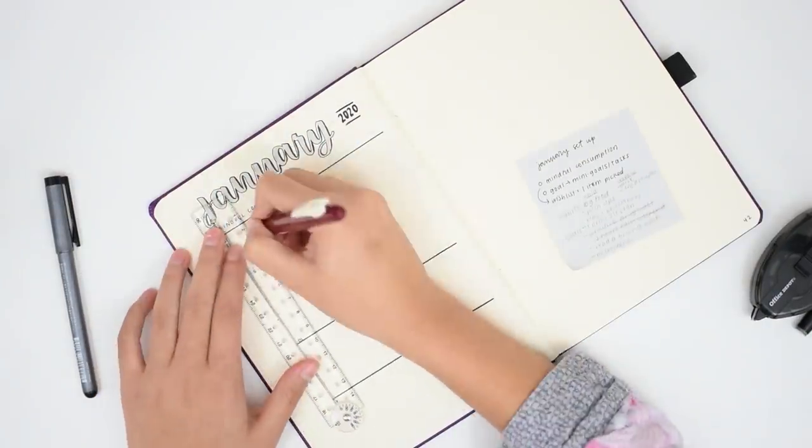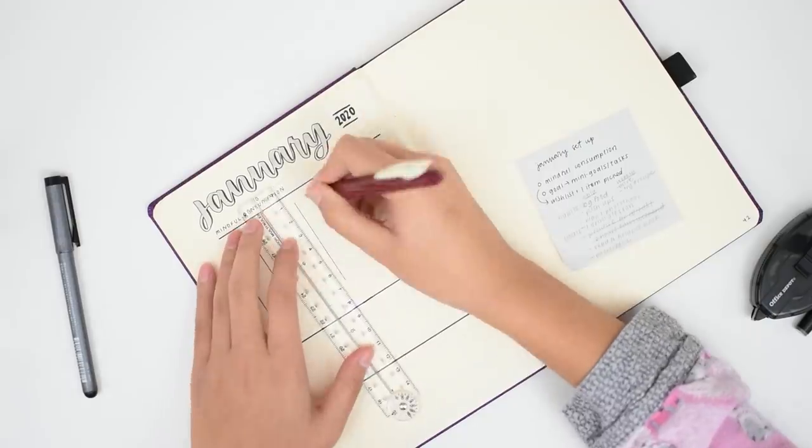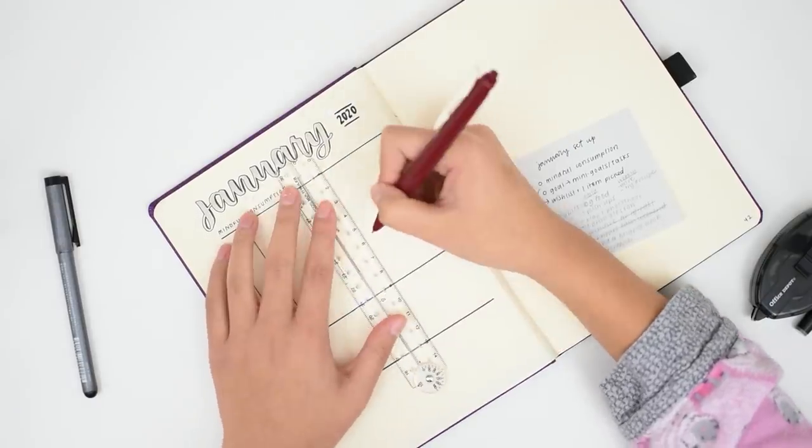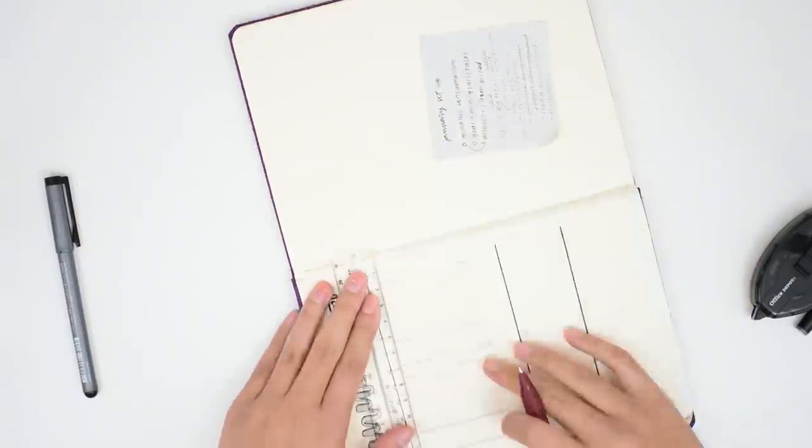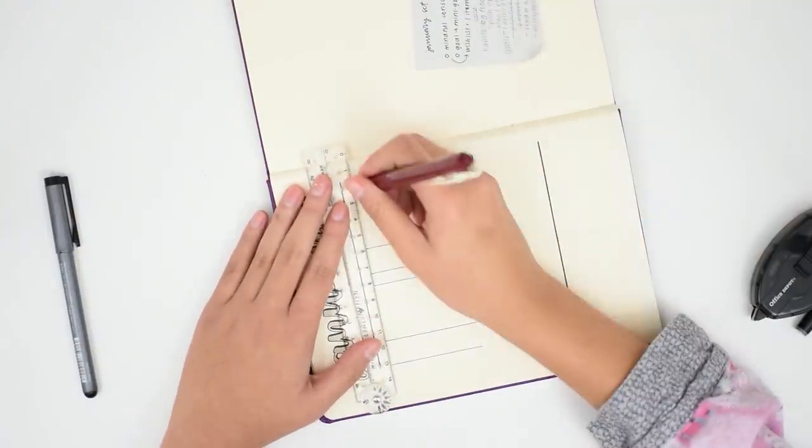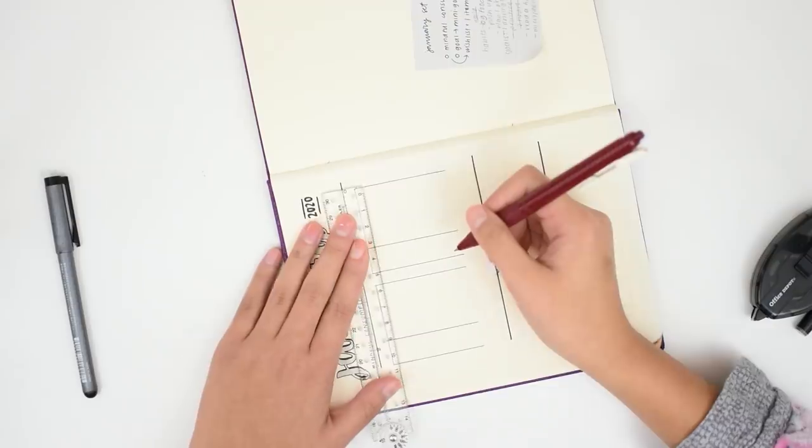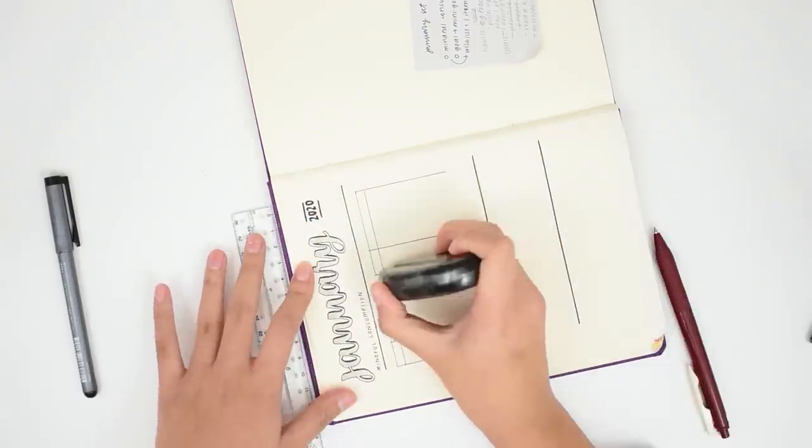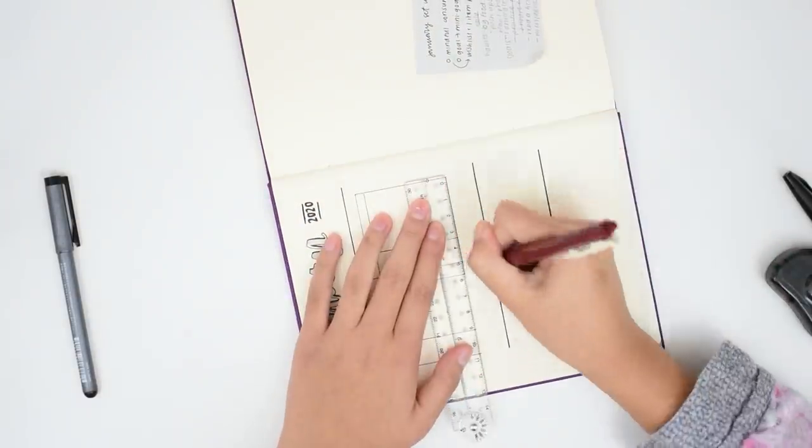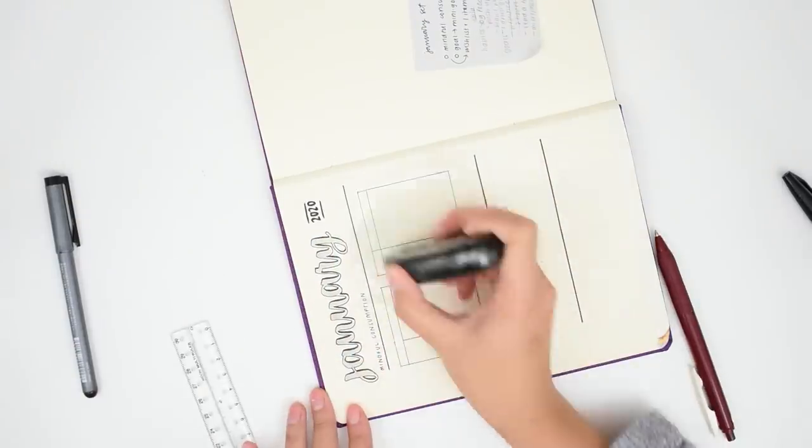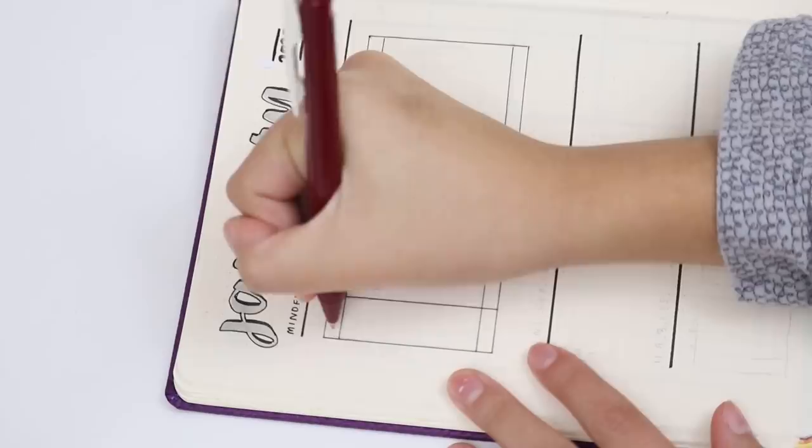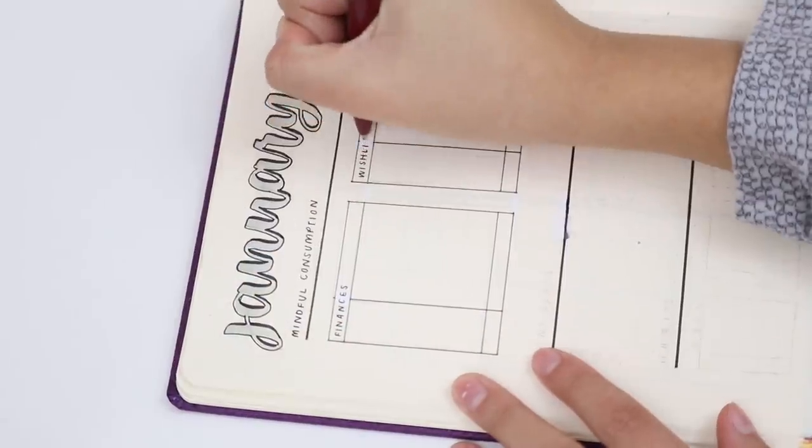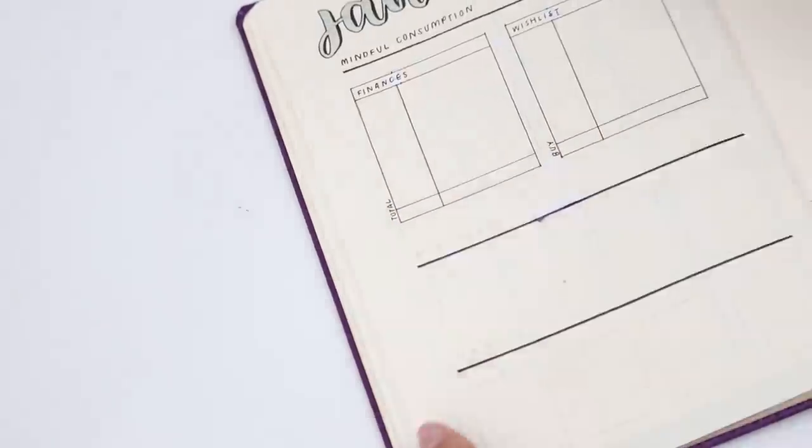I felt like I was doing things just so I would have something to put in my Plan With Me videos or something to take a picture of for my Instagram, not because I actually wanted to do it or felt like it would help me keep track of my life and organize it more clearly. For these reasons I decided to make my January setup very minimal, pretty much focused only on function and keeping a minimal line style that I still find aesthetically pleasing but doesn't take me too much extra time.